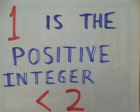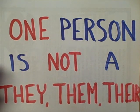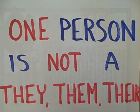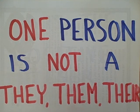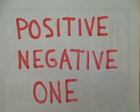The term one has one other very important implication in this class. If you're talking about one person, such as one psychologist or one patient, remember that one person is a he or a she, a his or a her — not a they, not a them, not a there, not a themselves. Just remember these definitions of positive, negative, and one, and you will do well in this course.